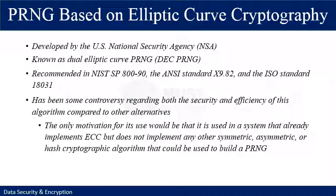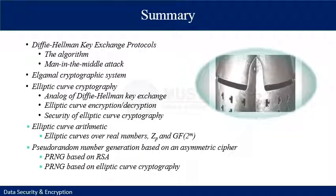Pseudo-random number generators based on elliptic curve cryptography were developed by the US NSA and are known as dual elliptic curve pseudo-random number generators. These are recommended in NIST SP 800 as an ANSI and ISO standard. There has been some controversy regarding both the security and efficiency of this algorithm compared to alternatives. The only motivation for its use would be in a system that already implements ECC but does not implement any other asymmetric or hash cryptographic algorithm that could build a pseudo-random number generator.